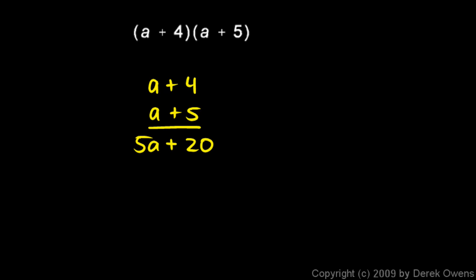Then I'll do 5 times a, and that's obviously 5a. I need to add those terms, and then I put a 0 down here as a placeholder, and I have a times 4. So I'll write 4a there and put a plus sign, and then I have a times a, and that's a squared.